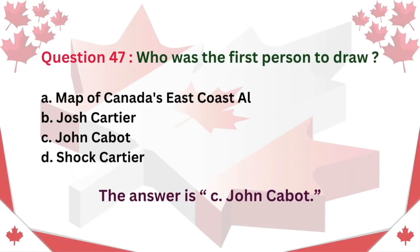Question 47: Who was the first person to draw a map of Canada's East Coast? A. Al. B. Josh Cartier. C. John Cabot. D. Jacques Cartier. The answer is C: John Cabot.